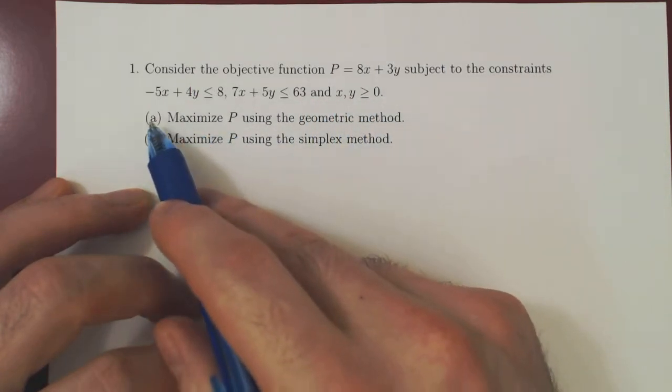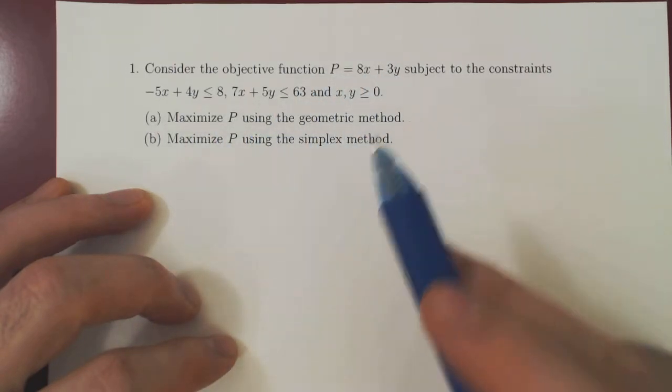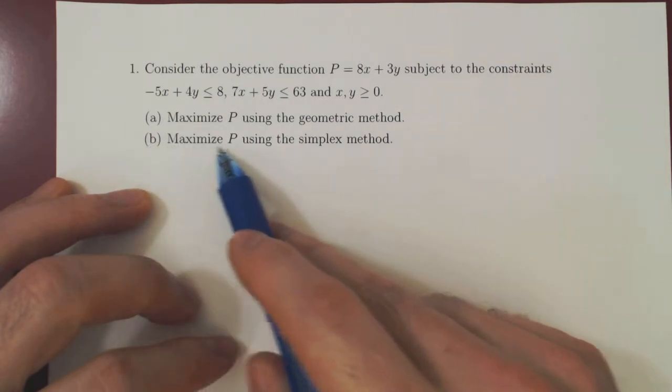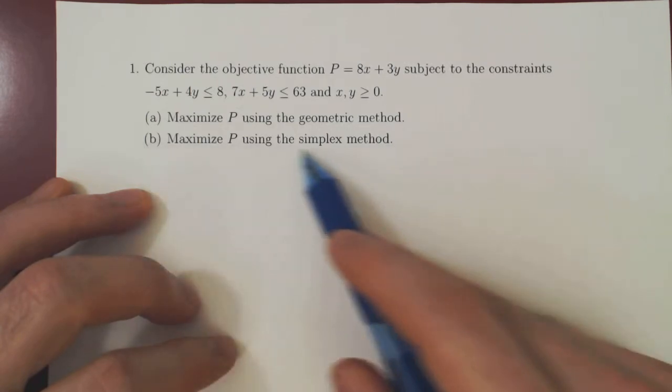So there are two parts. In part a we want to maximize P, the objective function, using the geometric method which we covered in the previous video. In part b we will then maximize P using the so-called simplex method, and this we'll do in our next video.